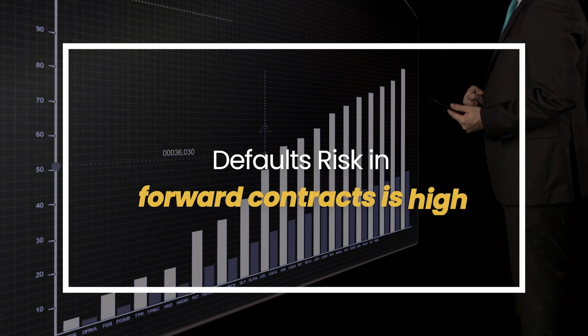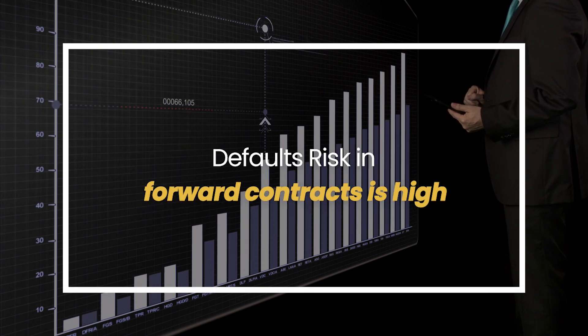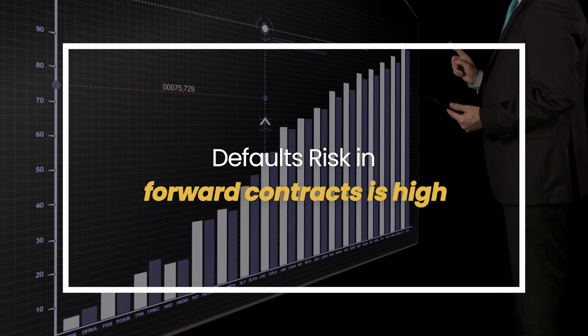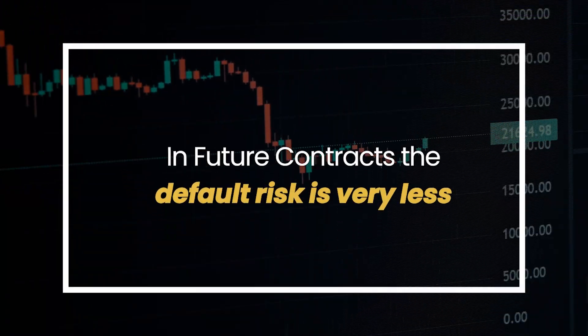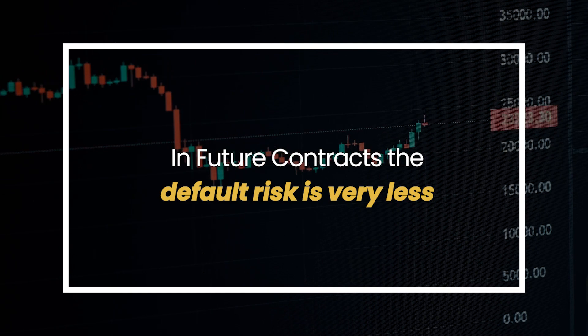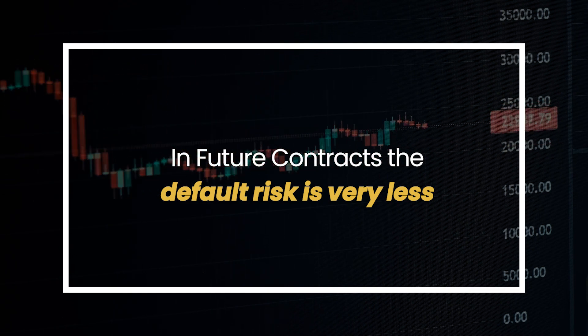In terms of default risk, the default risk in forward contracts is high because there is no regulation by any exchange. For futures contracts, the default risk is very less since the exchange collects an upfront margin from both parties.